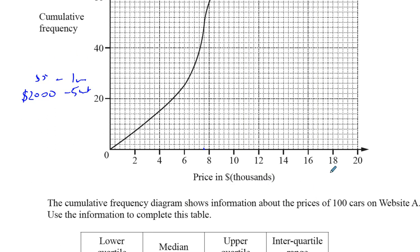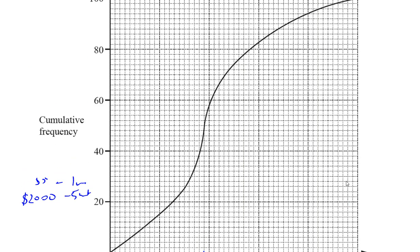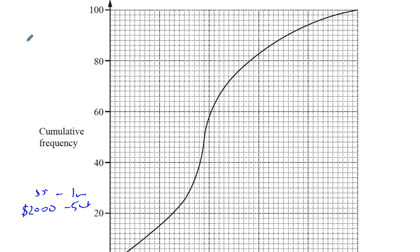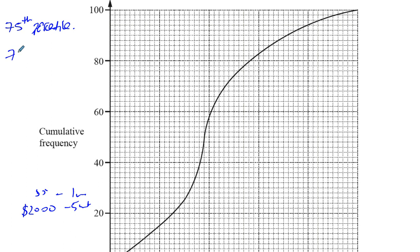Now we can find the upper and lower quartiles. The upper quartile is the value where three-quarters of the data is below it — that's the 75th percentile. So you go three-quarters up the y-axis, which in this case is 75, because there are 100 items of data.